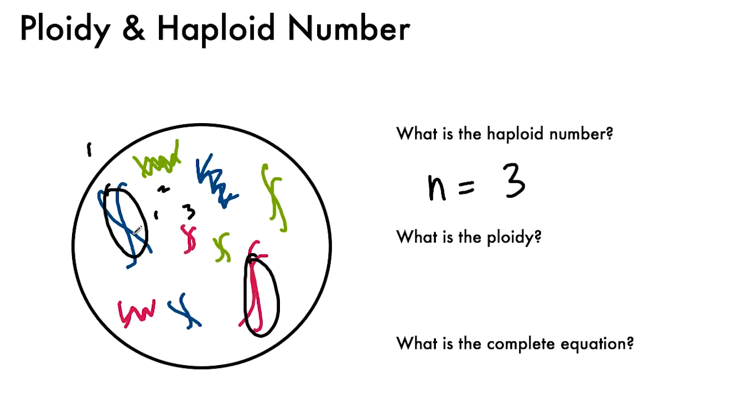Even though this is replicated, this is still only one. The ploidy is going to be three as well because nothing has changed. We still have three of every single type, and the complete equation is still 3n equals 9.